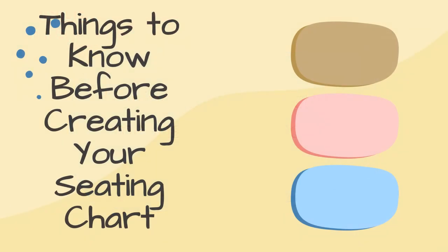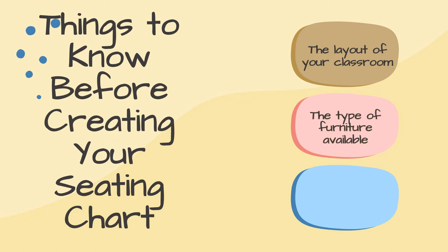Here are a few things to know before creating your seating chart. Knowing what your classroom looks like beforehand helps you choose the layout of your desks, shelves, and cabinets. Knowing the type of furniture available will help you decide how you will place the seats in the room. The administrator or school system may prefer seeing your students in a specific arrangement. Be sure to check with them to see if they prefer rows or a group arrangement, and ask these questions before you start designing your room.